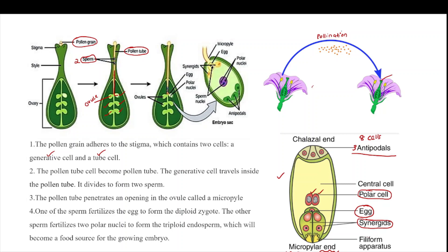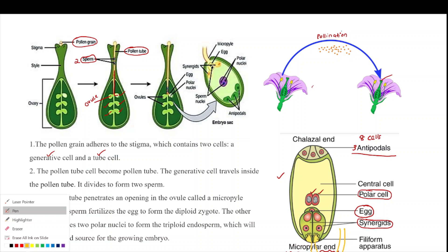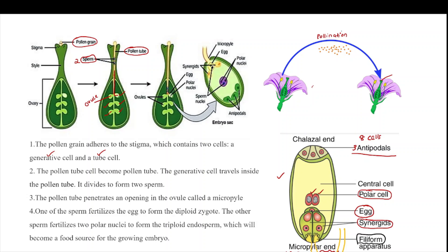The pollen tube enters into the ovule through the micropylar end. There is a thickening called the filiform apparatus present in the synergids, and this filiform apparatus guides the pollen tube into the synergids. Through the synergids, two sperm cells enter into the embryo sac.